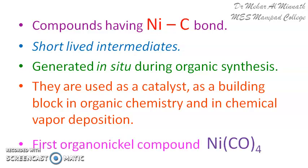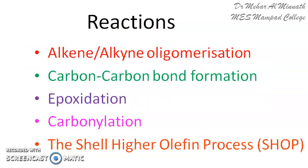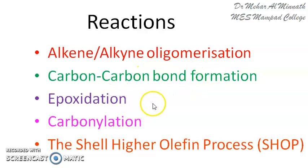The first organonickel compound developed was nickel tetracarbonyl, Ni(CO)₄. Nickel tetracarbonyl was reported in 1890 and it was applied in the Mond process for the purification of nickel. There are various reactions facilitated by organonickel reagents, such as alkene and alkyne oligomerization, carbon-carbon bond formation, epoxidation, carbonylation, the Sharp process, and the Shell higher olefin process.